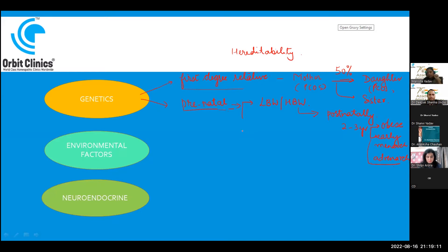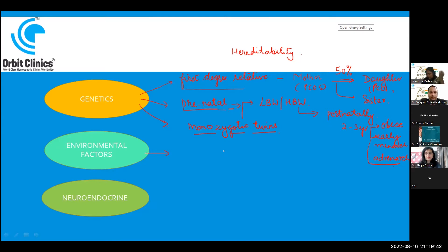If the patient has particular genes, she will develop the disease; otherwise there is less chance. It is also seen that PCOS is more common in monozygotic twins. Monozygotic twins develop from the same zygote — when a fertilized egg splits — so they are genetically very similar to each other. Therefore, if one monozygotic twin has PCOS, there is a greater chance of the other twin developing PCOS as well.